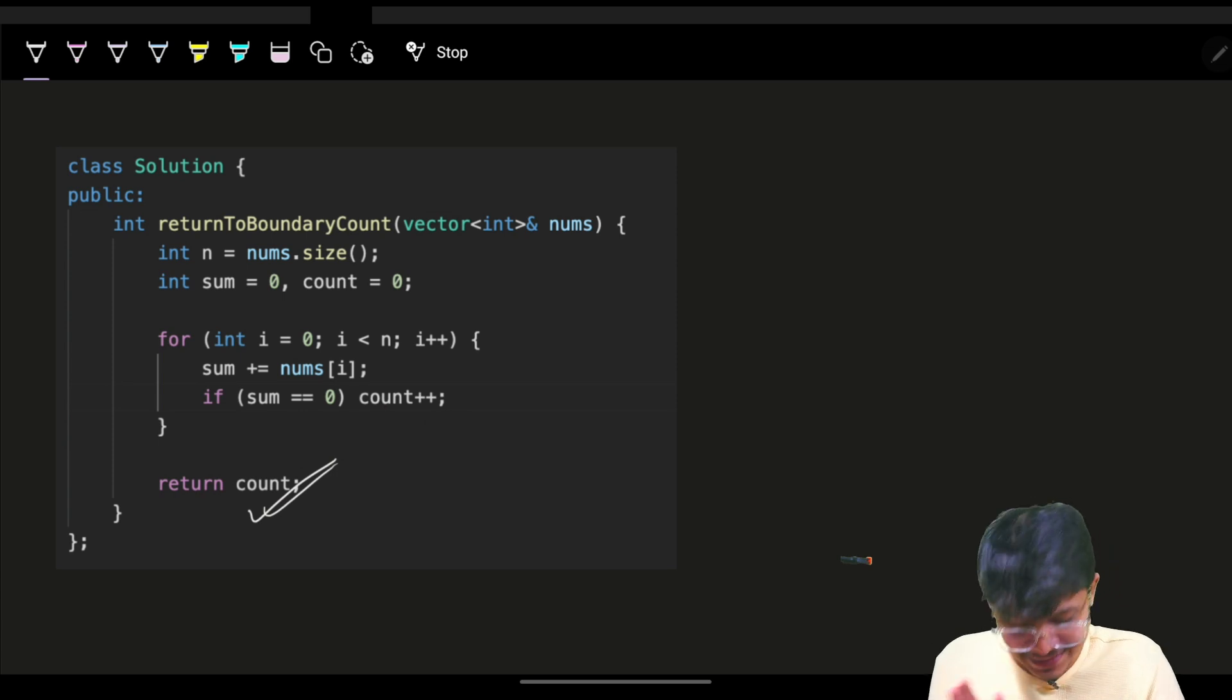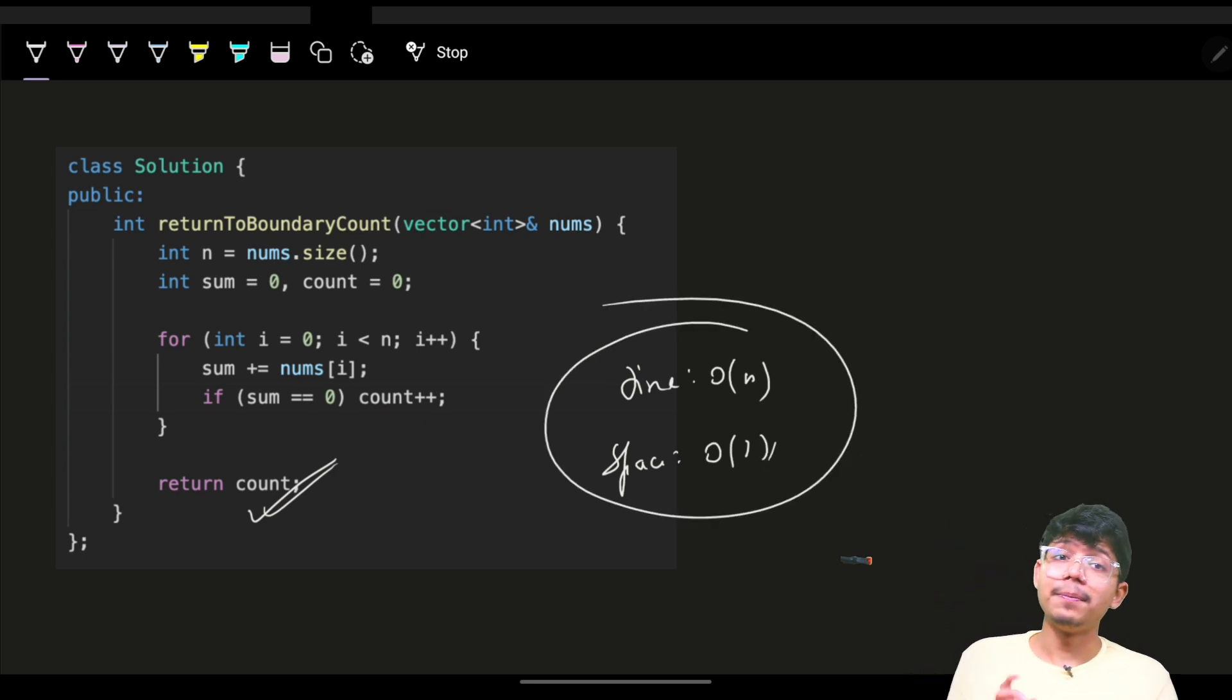It is simply O of n time. Time is simply O of n and space is nothing but O of one. That is how I can simply solve this algorithm. Cool. Thank you very much. Take care. Bye-bye.